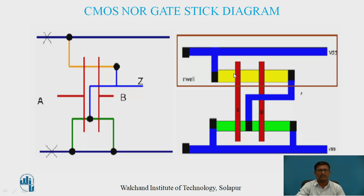The example of the NOR gate is also shown with its layout. The NOR gate uses two PMOS and two NMOS. In the pull-up network, the two PMOS are connected in series, and in the pull-down network, the two NMOS are connected in parallel with each other. Based on the layout, it is easy to draw the CMOS NOR gate stick diagram.